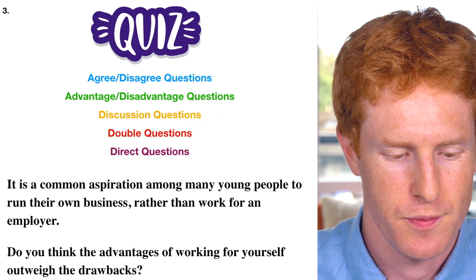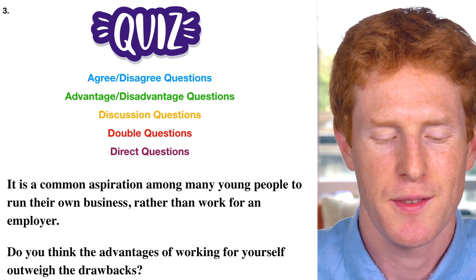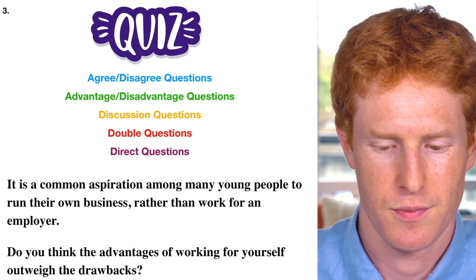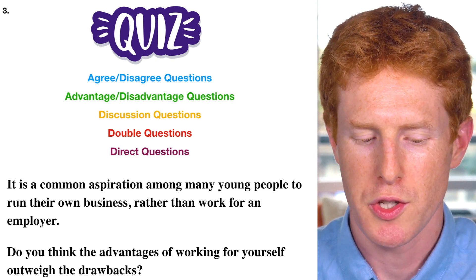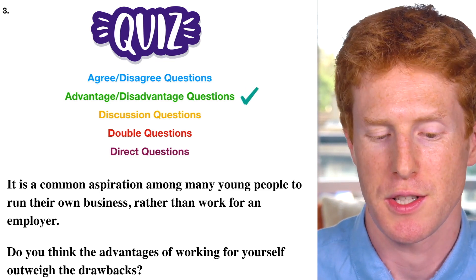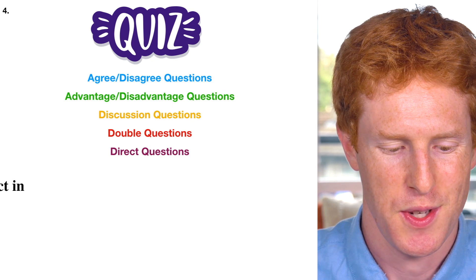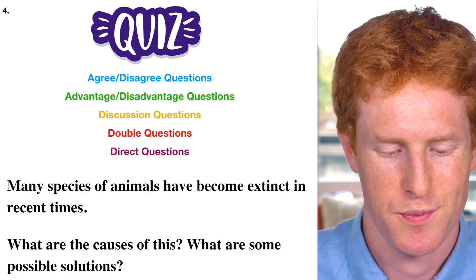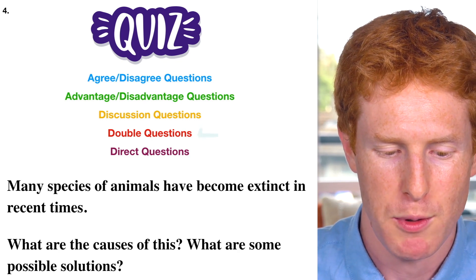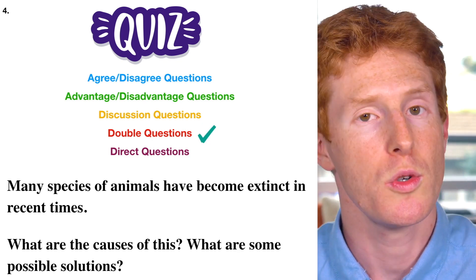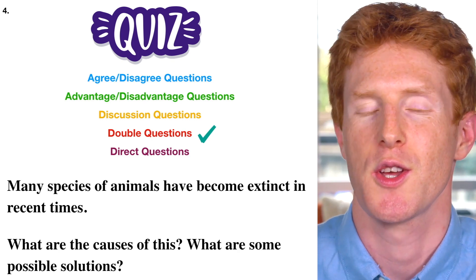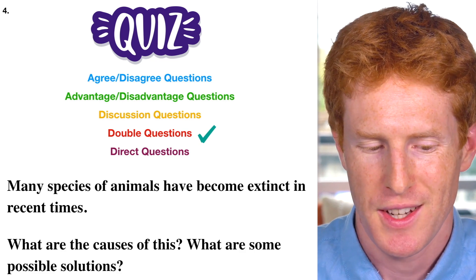Question three: it says 'do you think the advantages of working for yourself outweigh the drawbacks?' — it's an advantage-disadvantage question. Question four: we've got two questions here so we know it's a double question — 'what are the causes?' so we need to identify causes, and 'what are some possible solutions?' so we need to identify solutions.